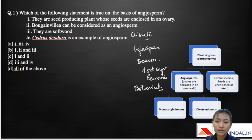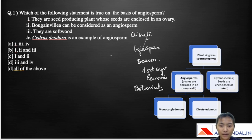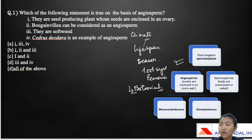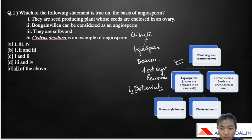Moving on to the question again — it is about angiosperms. If you look into the more detail of the classification, it belongs under botanical classification. Under the plant kingdom, in spermatophytes, field crops are divided into angiosperms as well as gymnosperms. Angiosperms are plants whose ovules are enclosed in an ovary wall, whereas gymnosperms have seeds that are not enclosed — they are naked. Under angiosperms, we can further divide into monocotyledons and dicotyledons.